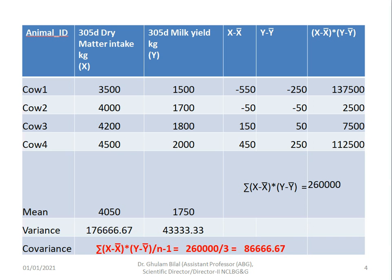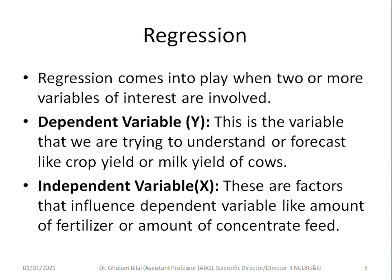If you have successfully calculated covariance and variance, it becomes very easy to calculate regression and correlation. Regression comes into play when two or more variables of interest are involved. In regression, we divide the variables into two types: a dependent variable — the variable of interest, for example milk yield of cows or crop yield — and independent variables, which are the factors that influence the dependent variable, such as amount of fertilizer or concentrate feed.